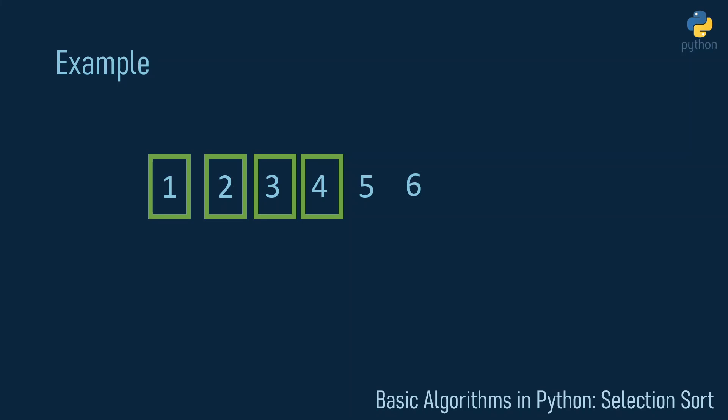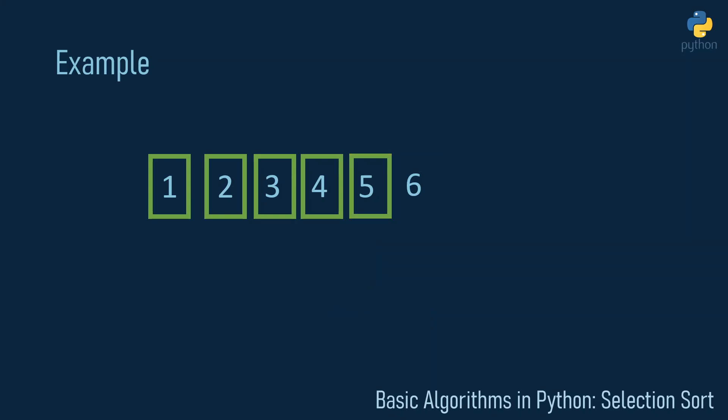That swap also leaves five and six in the right place, but the algorithm doesn't know it yet, so it needs one more iteration to verify the list is already ordered. We go on with the five, mark it as the current minimum of the unordered part, compare it to the six, and after this iteration nothing happens. We see that five is in the right position, and we automatically know the last element is in the right position too, because there's nothing to compare it to.